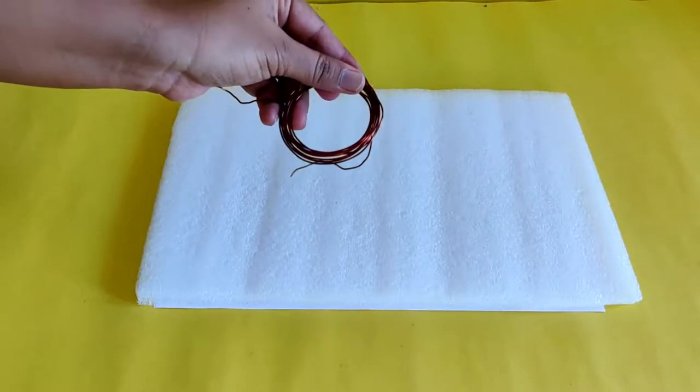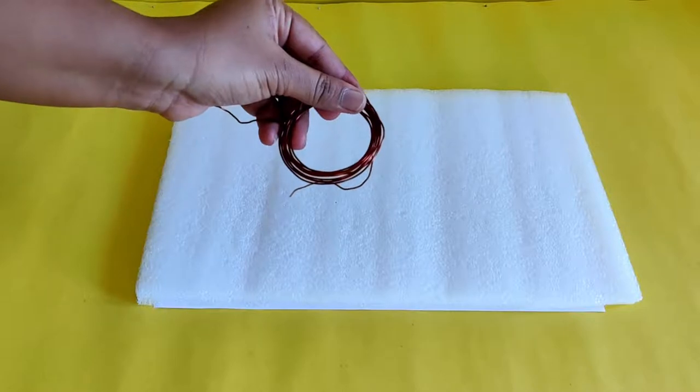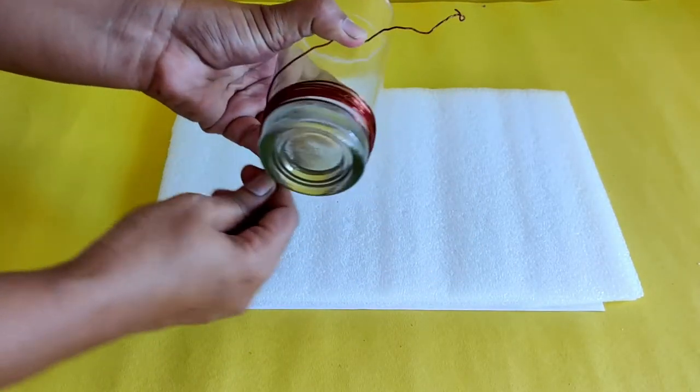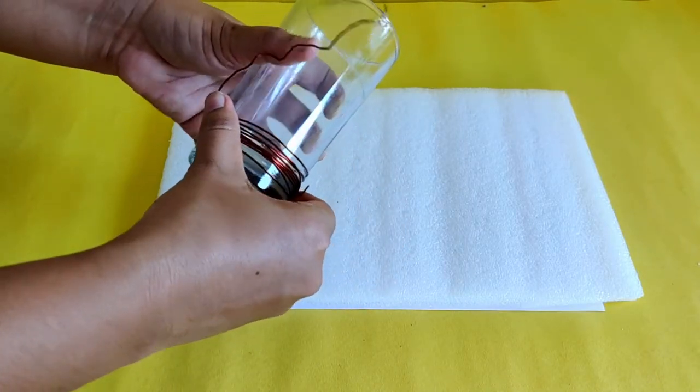Wind the copper wire into a coil of about 12 to 15 turns. You can do this by hand or with the help of a tumbler.